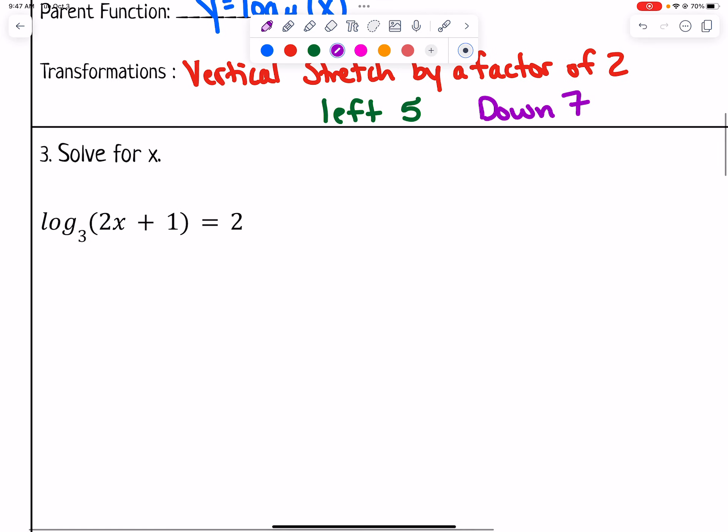Number 3 says solve for x. We're given a log function that has 1 log, so we can't just cancel it out. We need to rewrite it in exponential form. So that would give us 3² = 2x + 1.